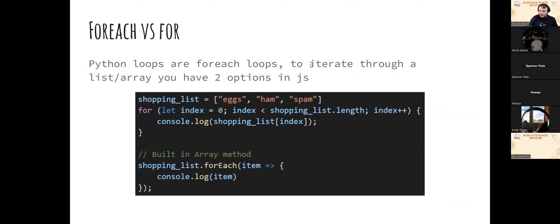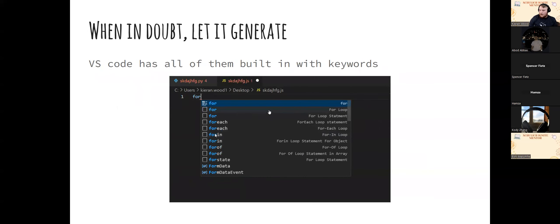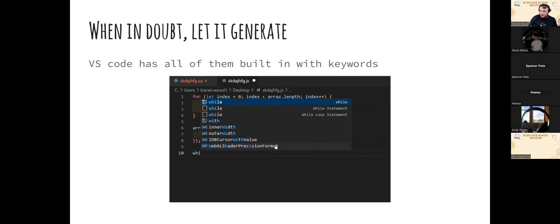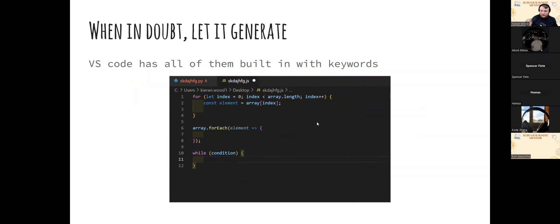For the for loop, you have two options in JS. The C-style uses an index — console.log, which is the same as print in JavaScript, would output shopping list at index zero, then one, then two, printing 'eggs', 'ham', 'spam'. The other option is the forEach style, which is a little uglier but concise. When in doubt, let VS Code generate the syntax — just type 'for' and hit enter to get the full for-loop syntax.